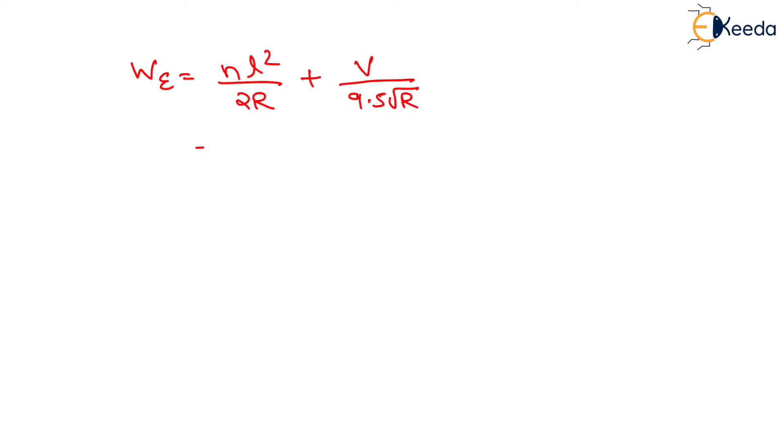On putting the value of N as 2 and the value of L squared upon 2R as 0.12, plus the value of V is given as 70 upon 9.5. The value of R is given as 204.167 which we had computed in the previous step.